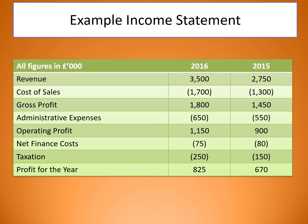Looking at this example of an income statement, you can see we've got revenue and cost of sales. These added together give us our gross profit, which is £1.8 million (in £100,000s). So revenue plus cost of sales — things like cost of materials — gives us our gross profit, which is always the highest figure.